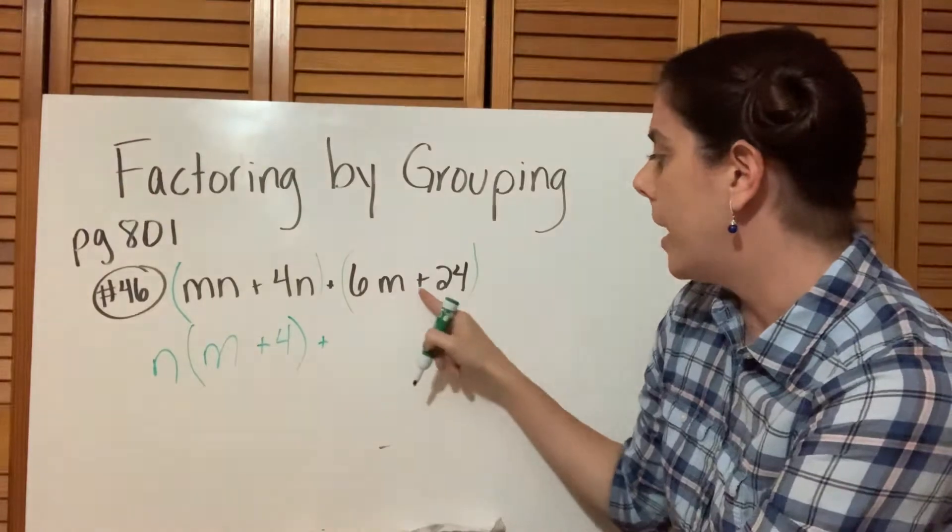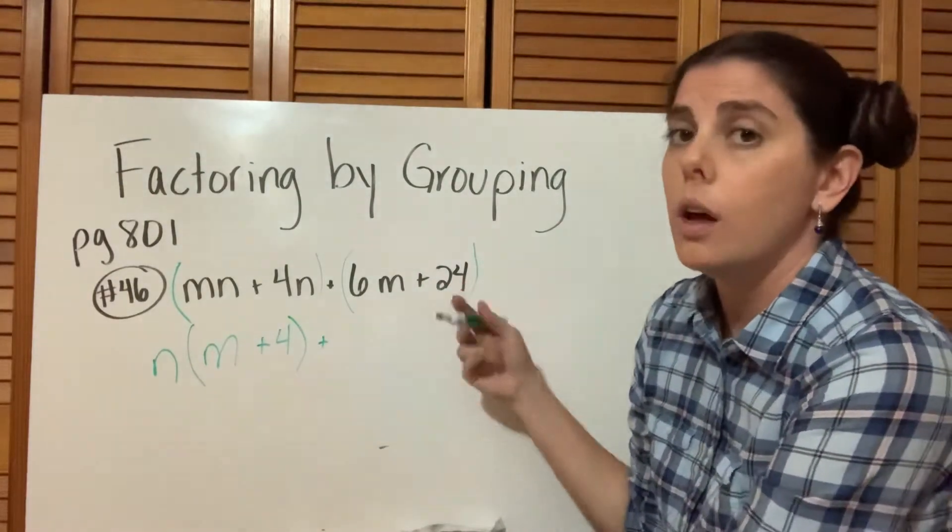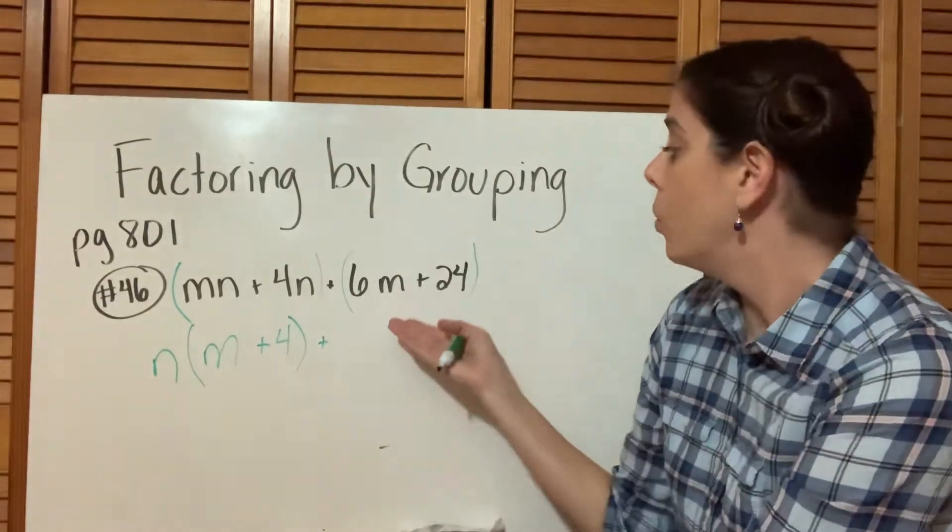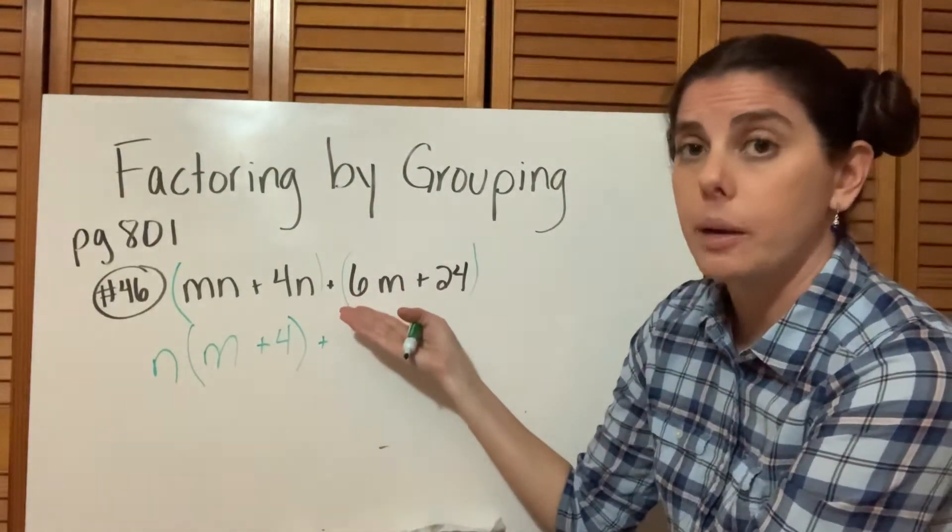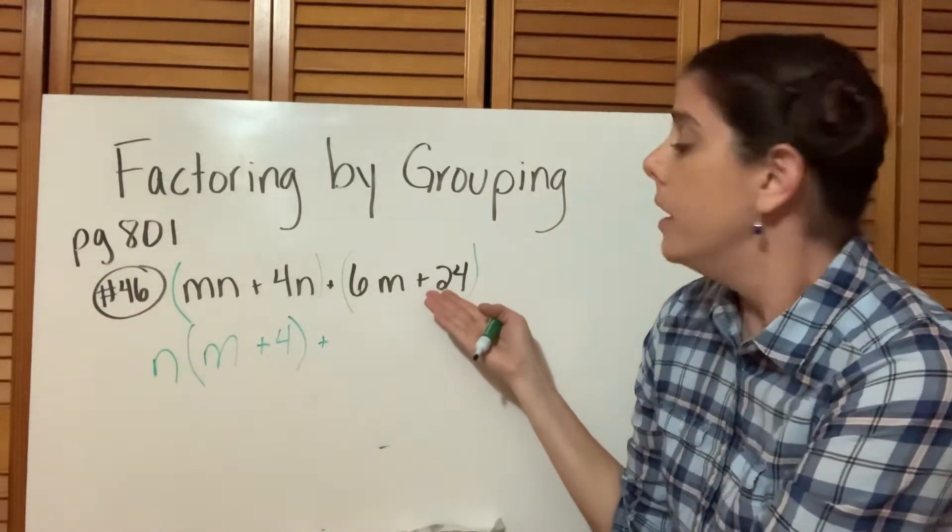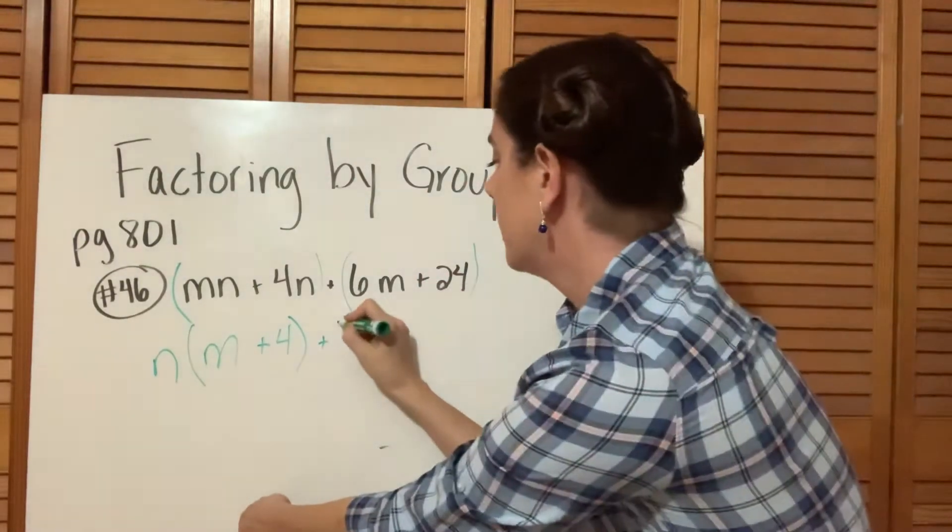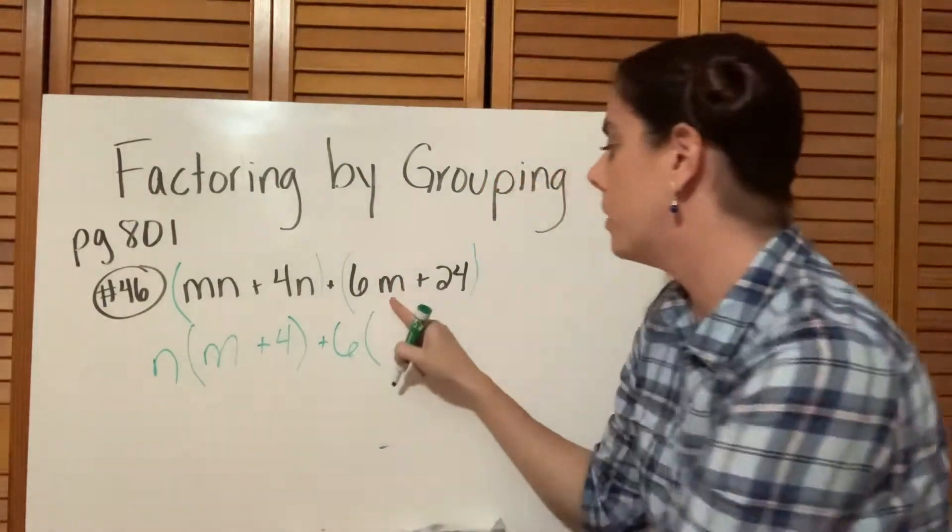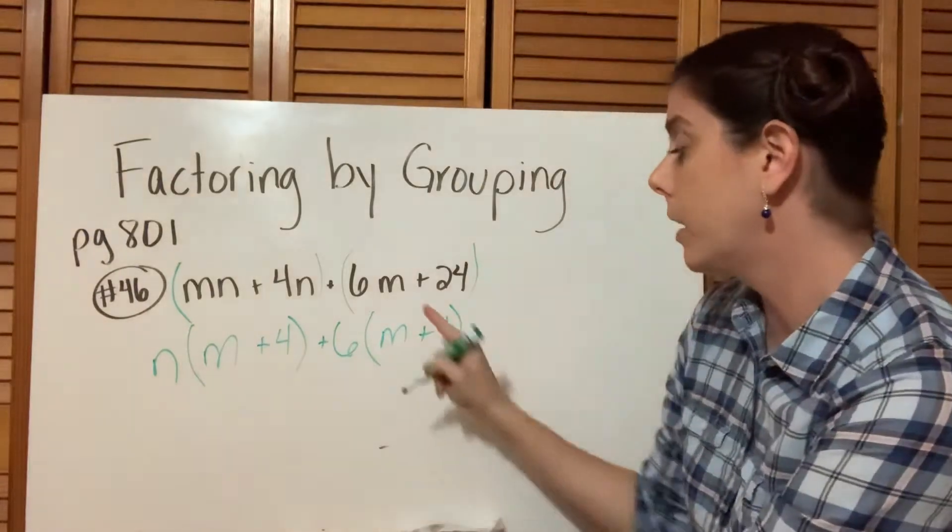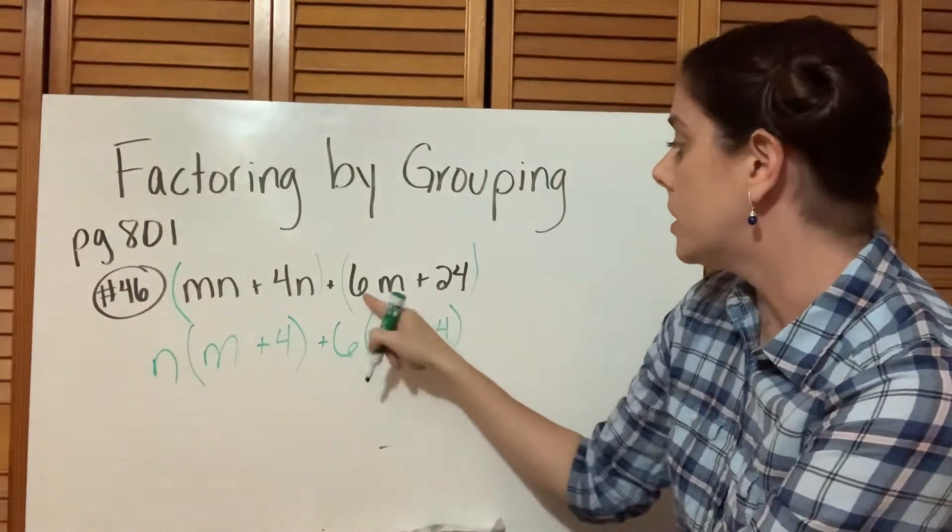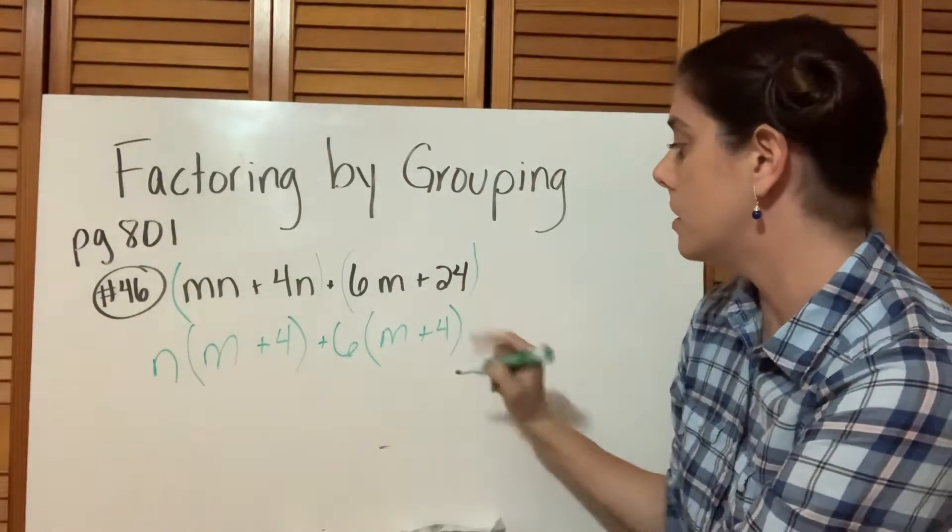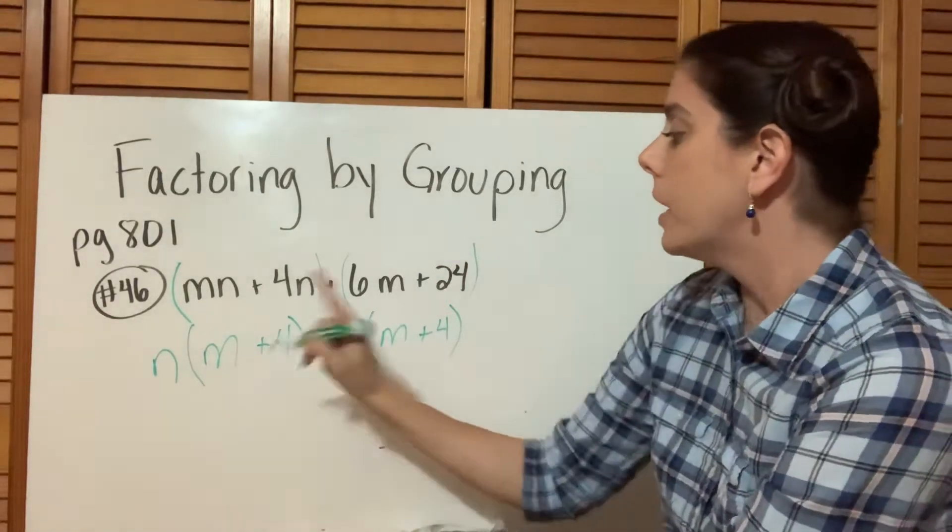We can bring down our plus sign. Looking at 6M plus 24, what would the GCF be? Six, correct? We can divide 6 by 6 and divide 24 by 6 as well. So if we factor out a 6, what are we left with inside? M plus 4. Six divided by 6 equals 1, 24 divided by 6 equals 4. Now look what happened.